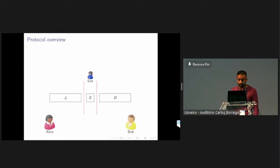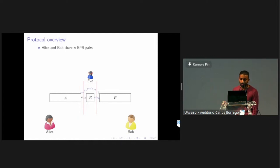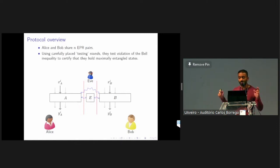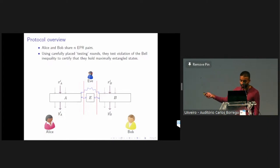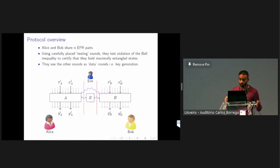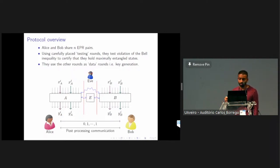Overall, the protocol is as follows. Alice and Bob, and also Eve, are physically separated. They may share entanglement — they start with EPR pairs, for example. They carefully choose testing rounds, in which they test the violation of the Bell inequality. If the Bell inequality is violated, they can certify that they must have shared maximally entangled states. The other rounds are data rounds, used to get the raw key, and then they do post-processing communication and privacy amplification to get the final key.